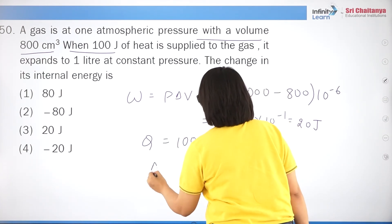Question 45: a system is given 300 calories = 300×4.2 = 1260 J of heat and does 600 J of work. Change in internal energy ΔU = Q − W = 1260 − 600 = 660 J. Correct answer is option 1: 654 joules.